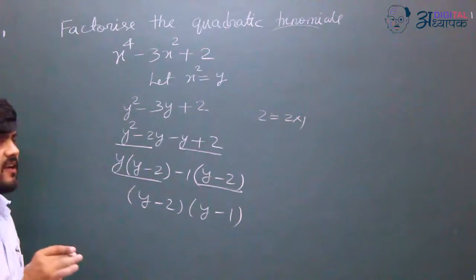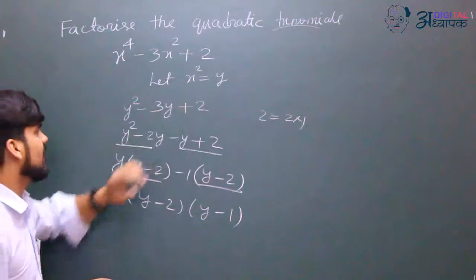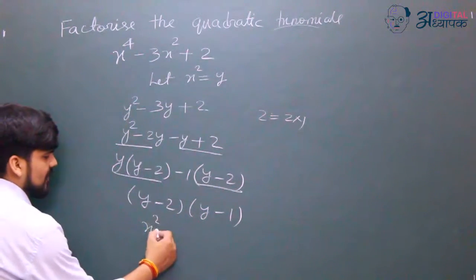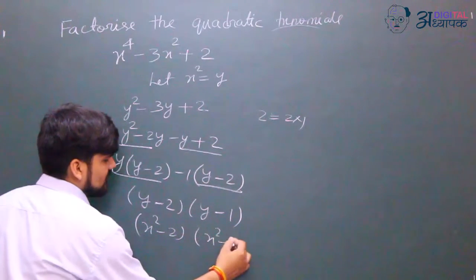Now the question has y terms and x terms. So substituting back, we can write (x^2 - 2) and (x^2 - 1).